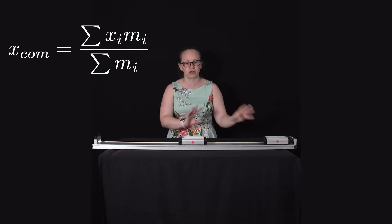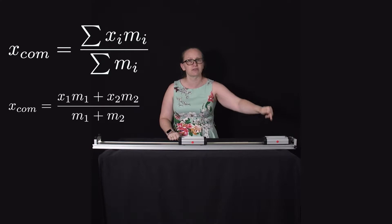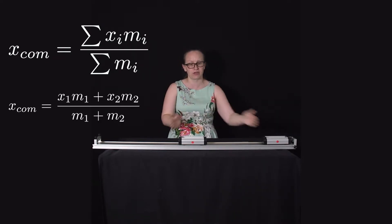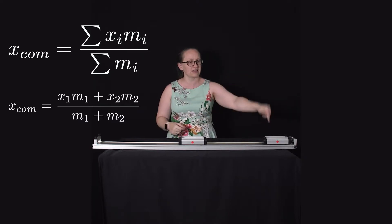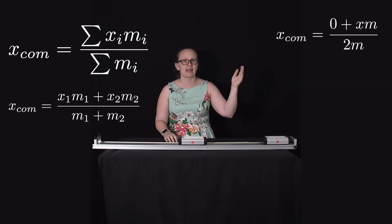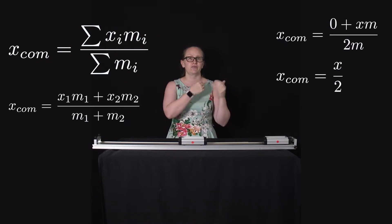If you can't see it intuitively, you can see it mathematically. Remember that x for the center of mass is equal to the sum of xi times mi over the sum of mi. So in this case with two carts, x_com equals x1*m1 plus x2*m2, all divided by m1 plus m2. Since m1 equals m2 equals m, and the first cart is at x equals 0 and the second at x, we get x_com equals x over 2 — exactly halfway between them.